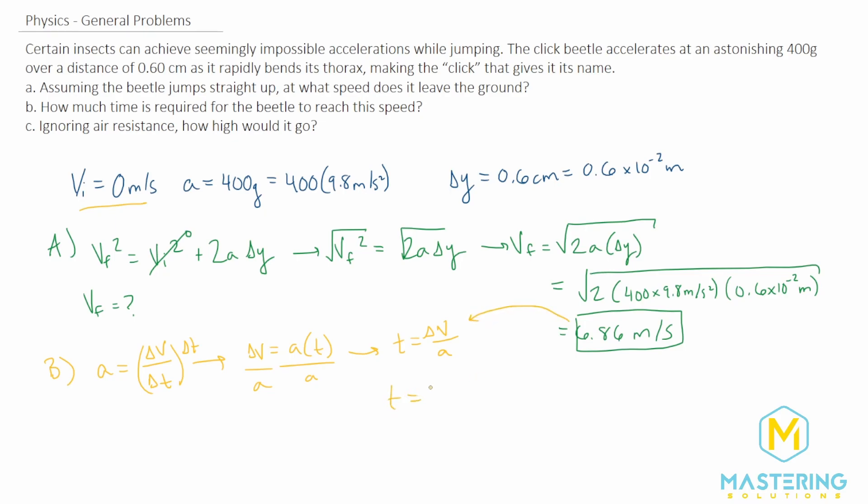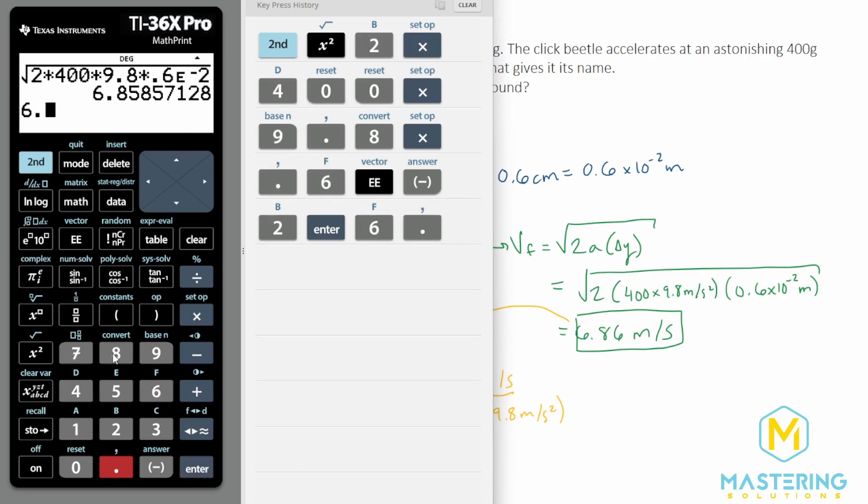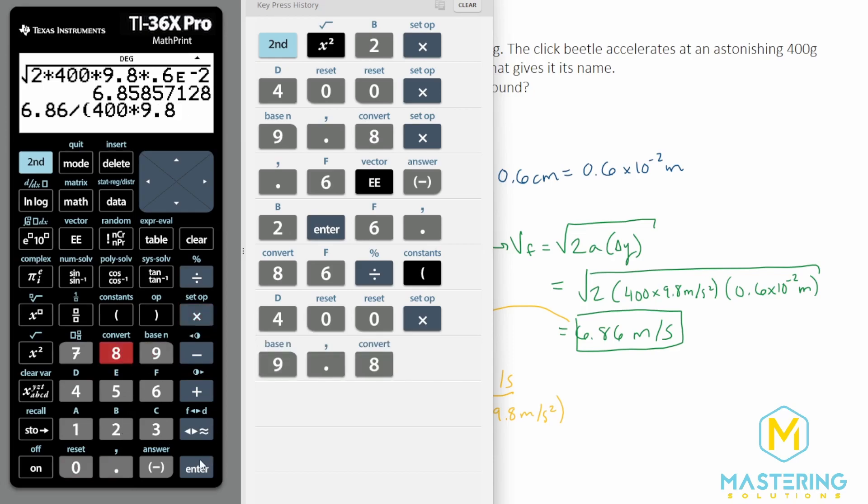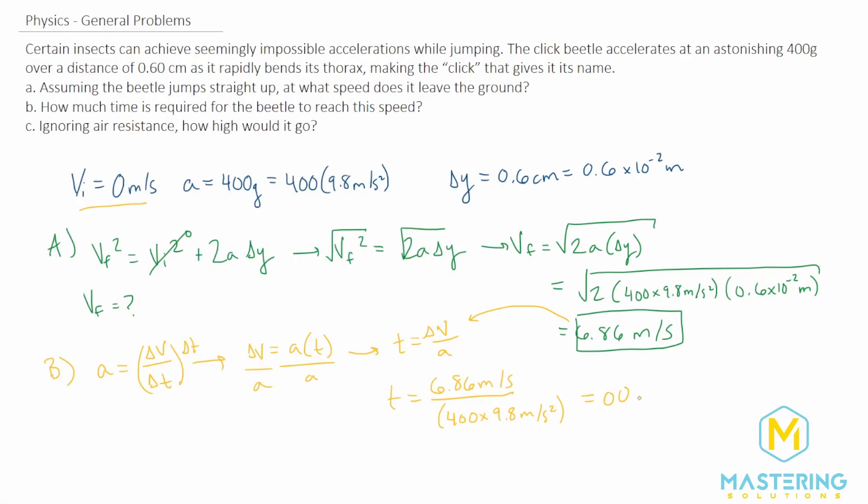So t is going to be equal to 6.86 meters per second divided by 400 times 9.8 meters per second squared. So 6.86 divided by 400 times 9.8.